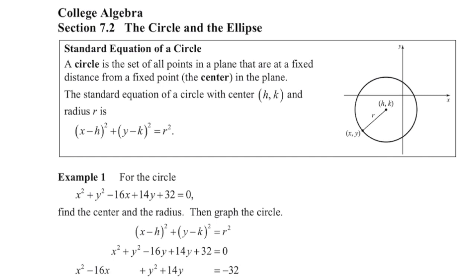Last time we talked about the parabola. This time we're going to talk about the conic sections of a circle and an ellipse, and then finally in the last lesson we're going to talk about the hyperbola. Let's jump into talking about the circle and the ellipse. A circle is a set of all points in a plane that are at a fixed distance from the center. We have a standard equation that has the center of the circle at h, k and our radius is r.